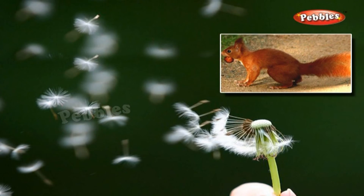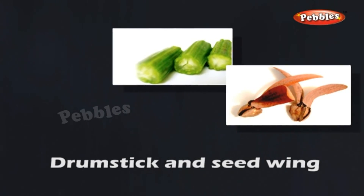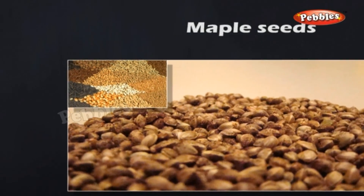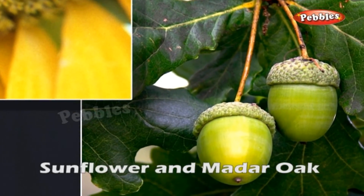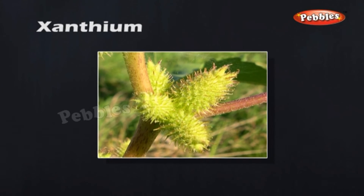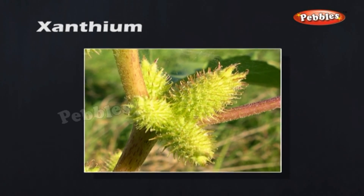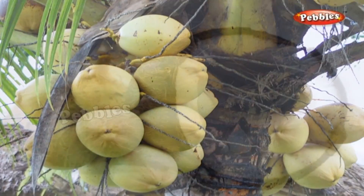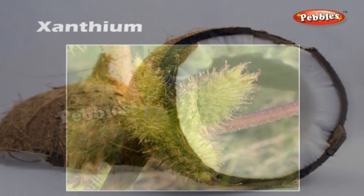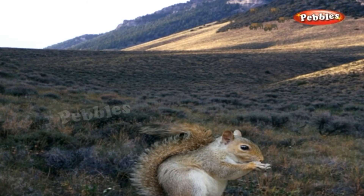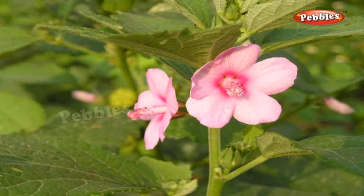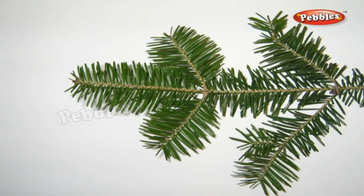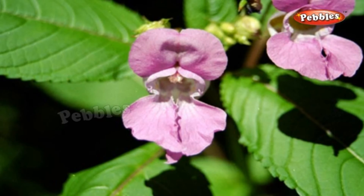Seed dispersal: seeds and fruits of plants are carried away by wind, water and animals. Winged seeds such as those of drumstick and maple, light seeds of grasses, or hairy seeds of oak, madar and hairy fruit of sunflower get blown off with the wind to faraway places. Some seeds are dispersed by water — these fruits or seeds usually develop floating ability in the form of a spongy or fibrous outer coat, as in coconut. Some seeds are dispersed by animals, especially spiny seeds with hooks which attach to the bodies of animals. Examples are Xanthium and Urena. Some seeds are dispersed when fruits burst with sudden jerks, scattering seeds far from the parent plant, as in castor and balsam.